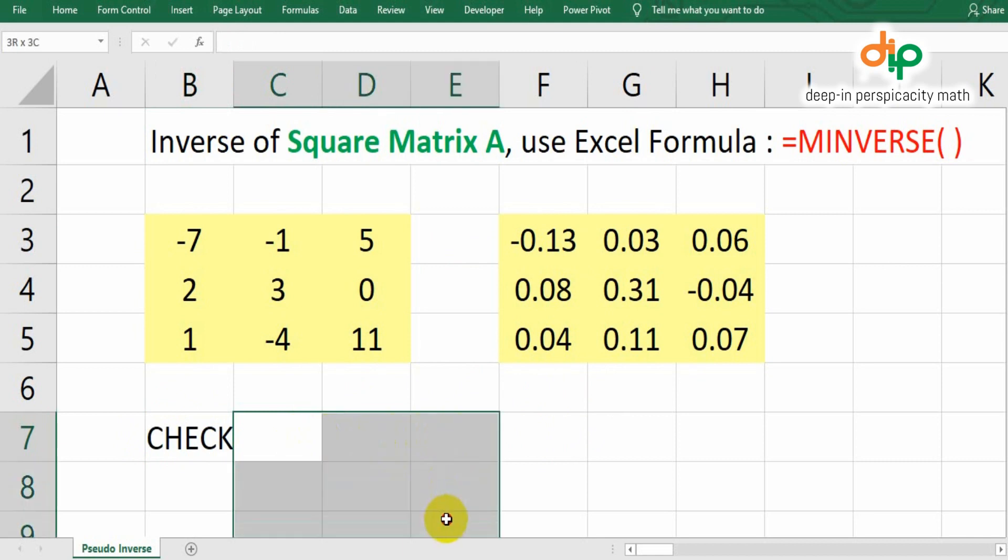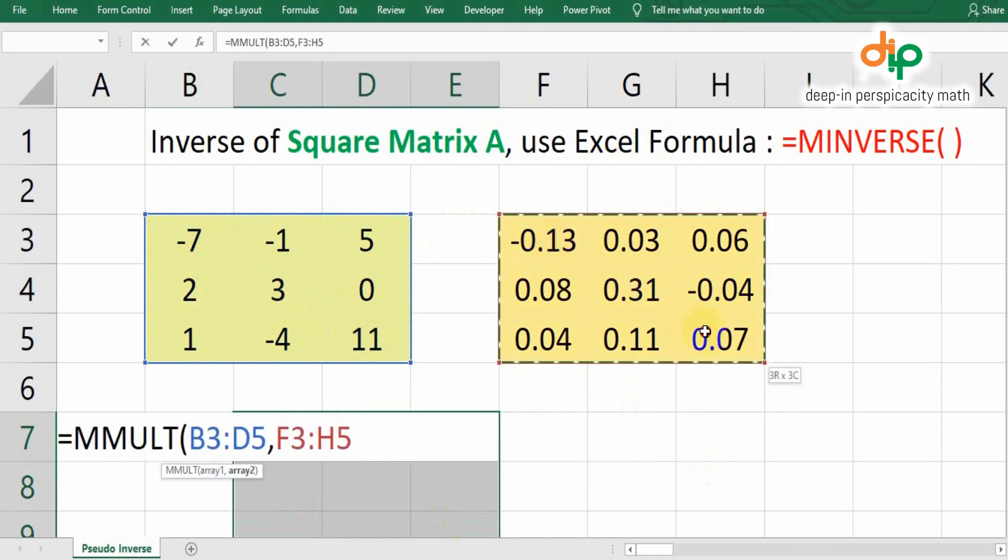The identity matrix as a product of multiplication between original matrix and its inverse is a principle to verify the validity of the matrix inverse. This principle will also be used to verify the Moore-Penrose inverse.